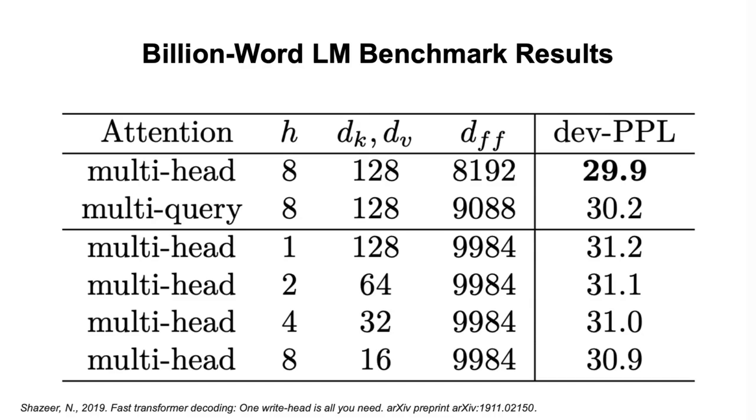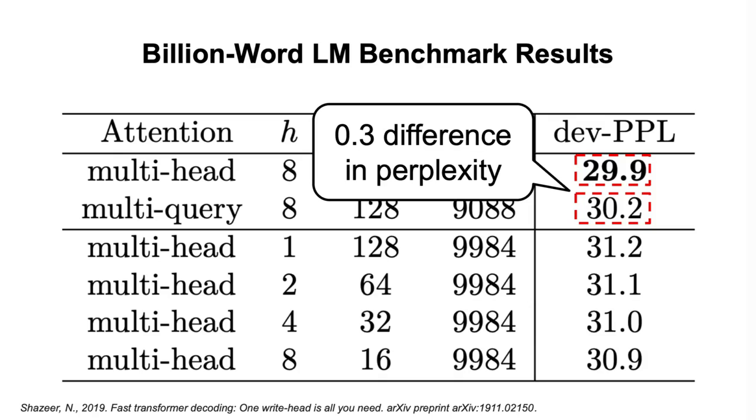The next criteria is the performance for which the authors looked at the perplexity on the billion word language modeling benchmark. And as you can see here, the multi-query attention obtained just slightly worse results as its perplexity is a bit higher than the one of the multi-head attention. So, to sum up, what this means is that by replacing the multi-head attention with the multi-query attention, we gain a significant speedup in computation at the cost of a minor degradation in performance.